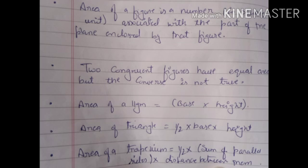The area of a figure is a number associated with the part of the plane enclosed by the figure. The area of any figure is a number, and it is associated with the part that is enclosed. For example, if we have made a triangle, that triangle is a figure, and its area is a number — say 25 or 26 square units.